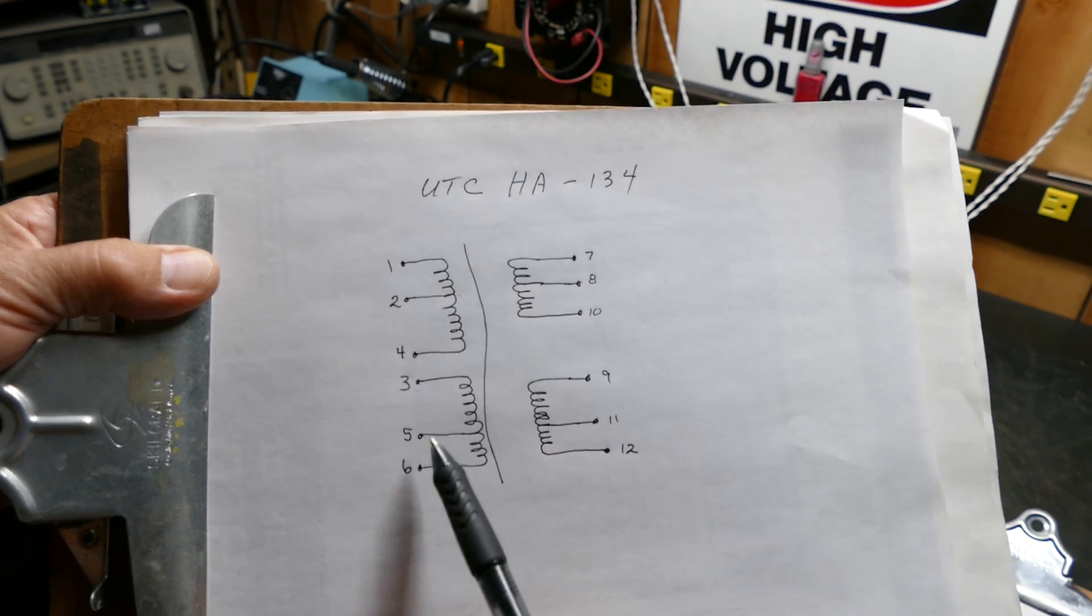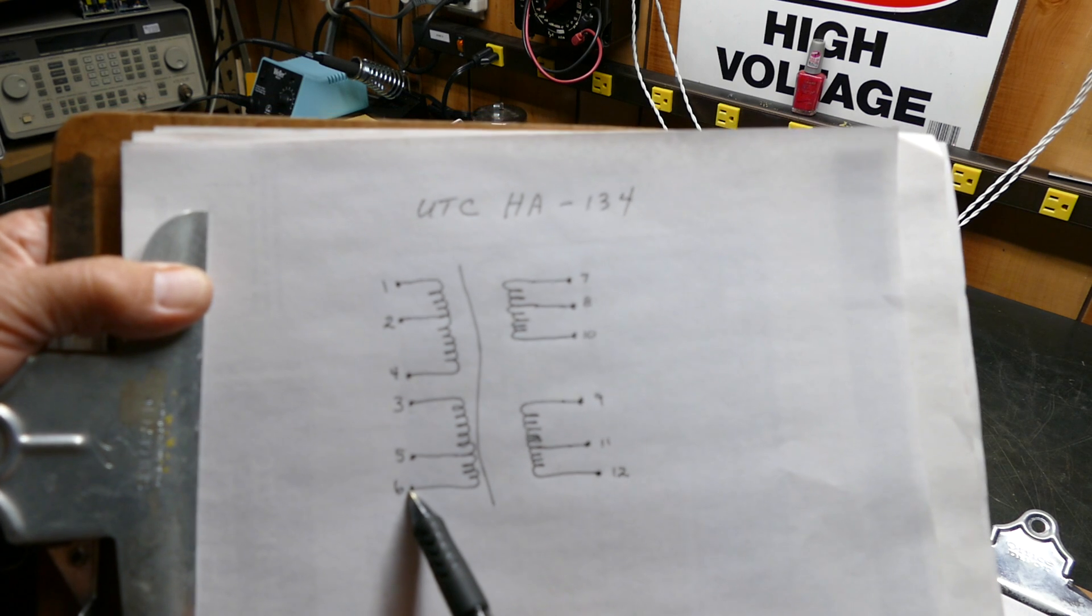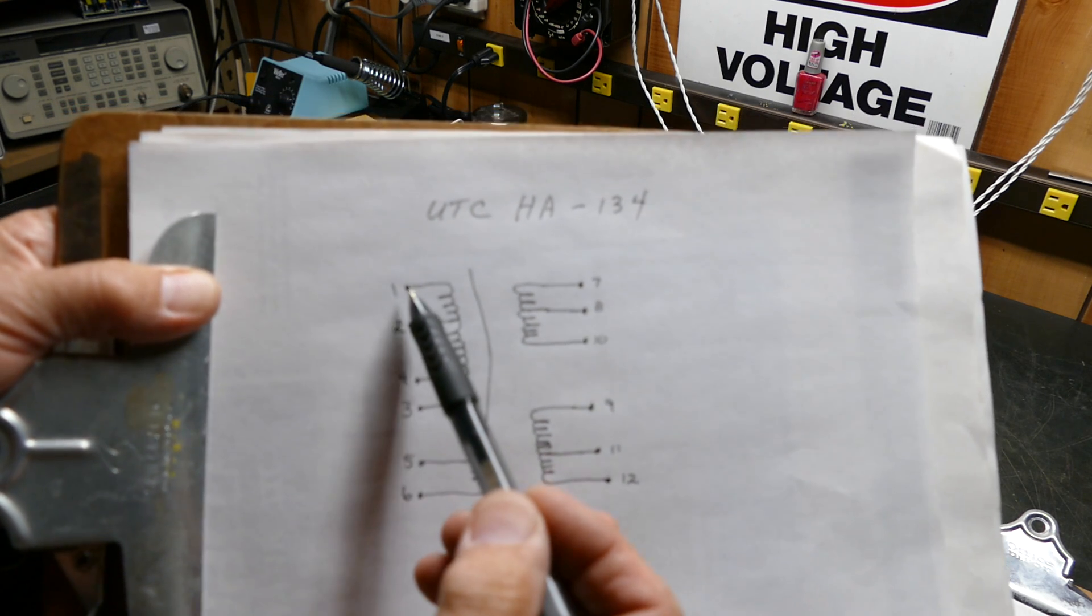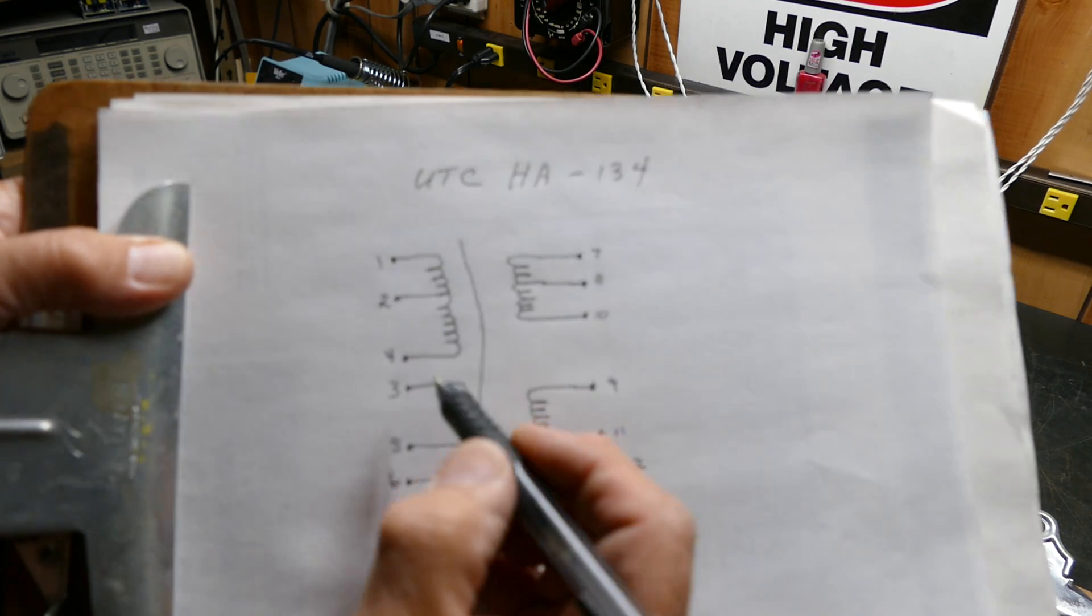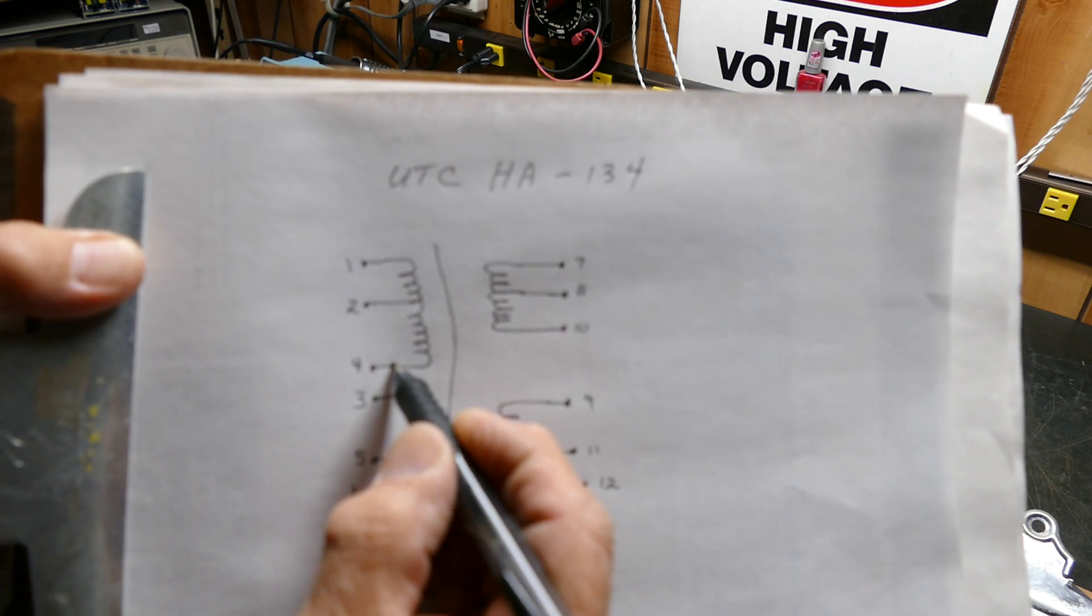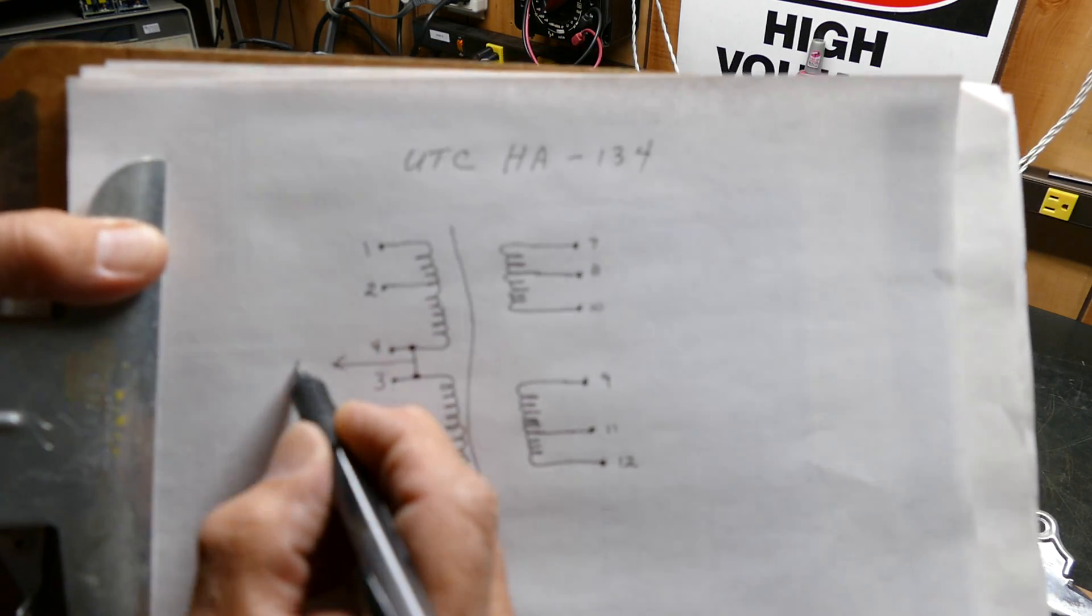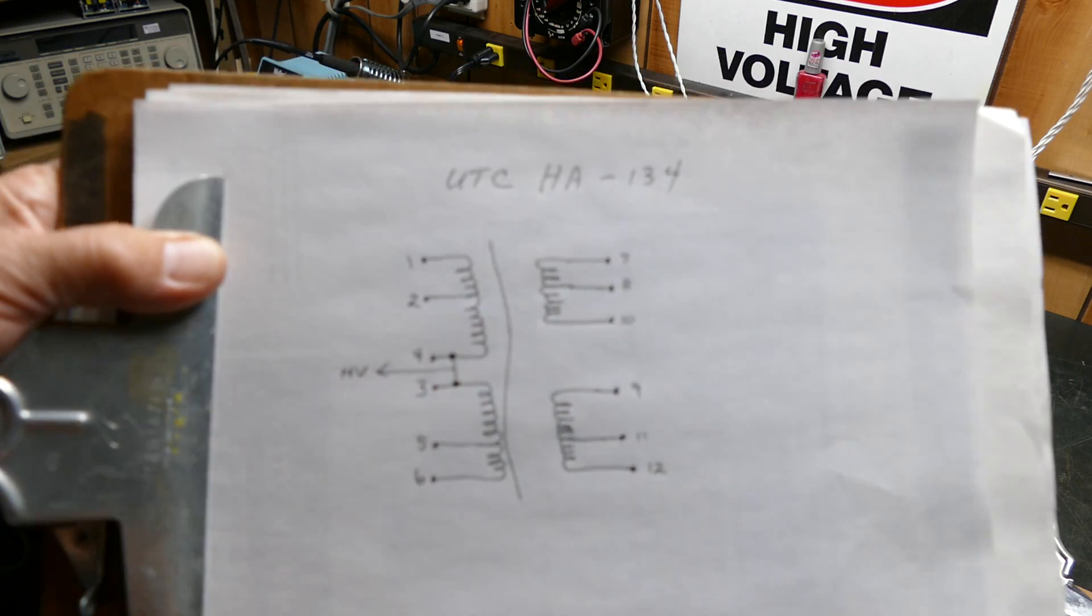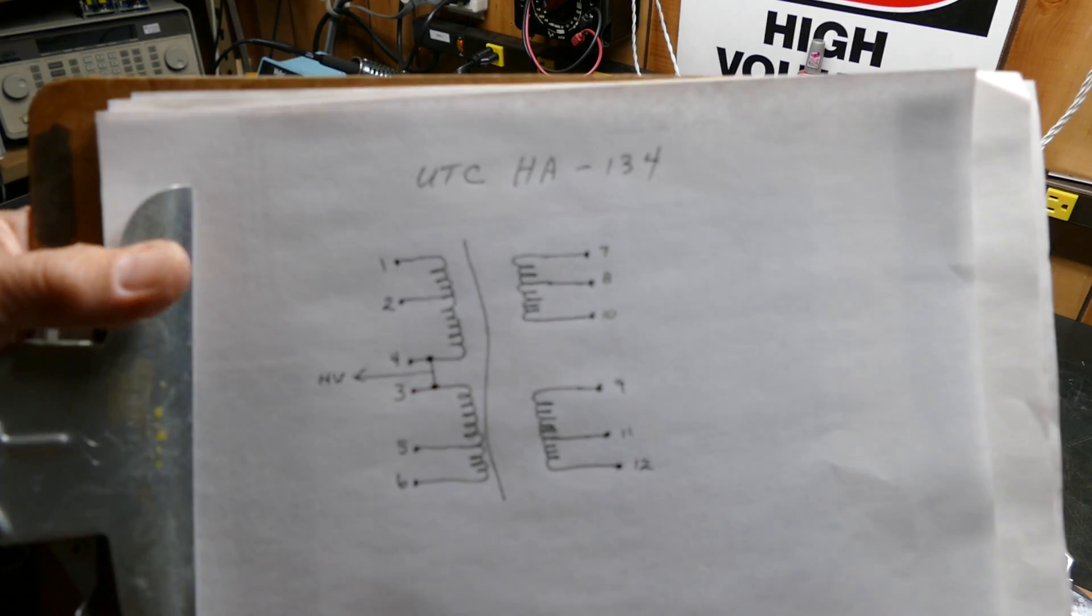These might be able to be used as screen taps if you put the plate here and the plate here. Assuming you don't use these, you can put the plate here on pin 1 and the plate on pin 6, and then you've got to strap these two together. This is your center tap. This will be off to the high voltage. This is for a center tapped push-pull amplifier.